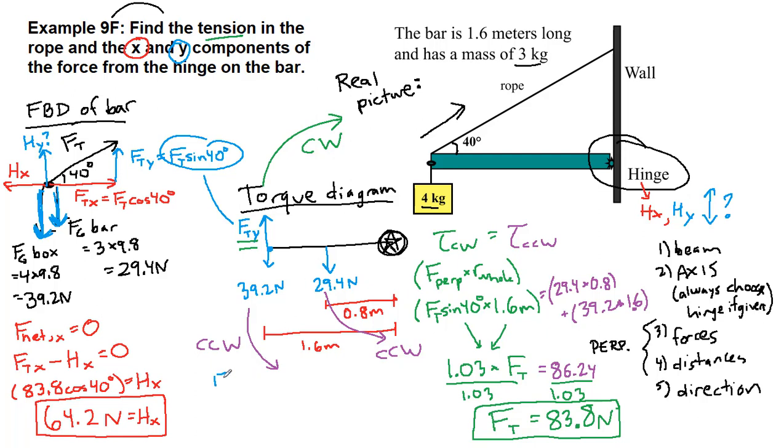And then for the y direction, we have F_net y is equal to 0. And so using the arrow directions as we've drawn them, Hy plus FTy minus FG of the box minus FG of the bar, all of that equals 0. The pluses and minuses come from the same sign for the same direction and opposite sign for opposite direction. I've got to skip some steps because I'm running out of space. But Hy is going to be equal to the 39.2 plus the 29.4 minus the 83.8 sine 40 degrees for the y component of the tension. And so what we will get is a positive 14.7 newtons.